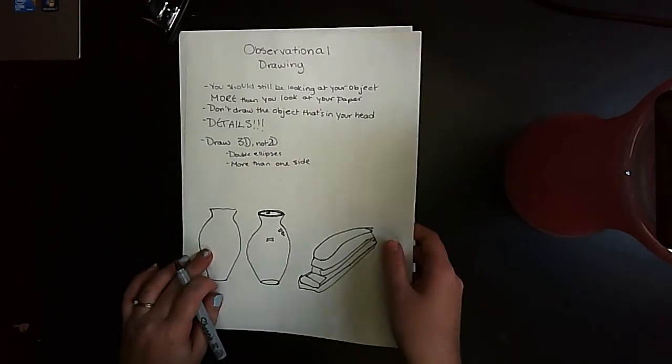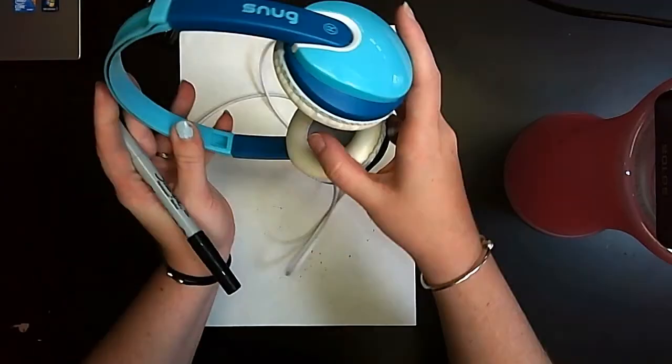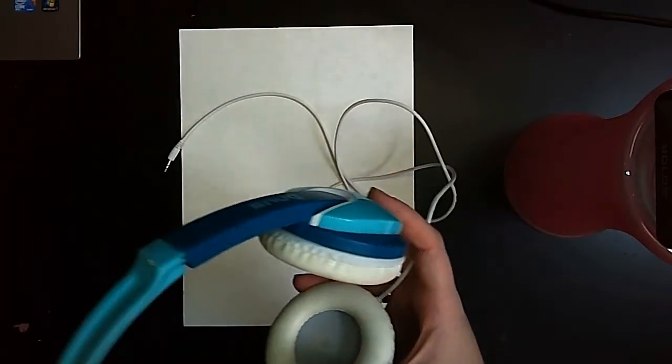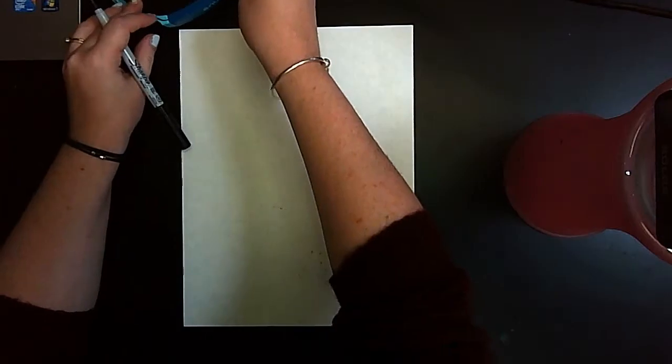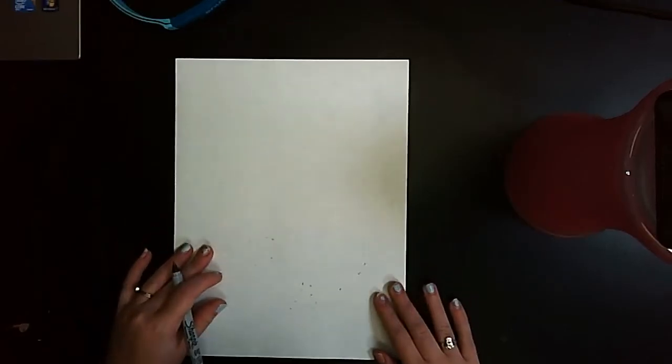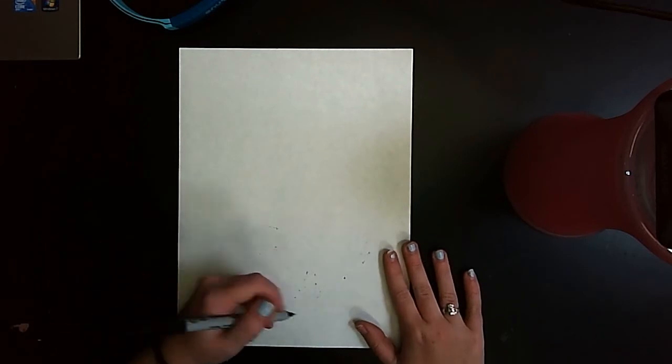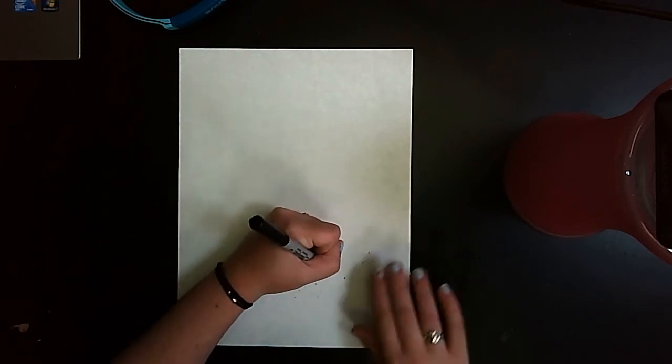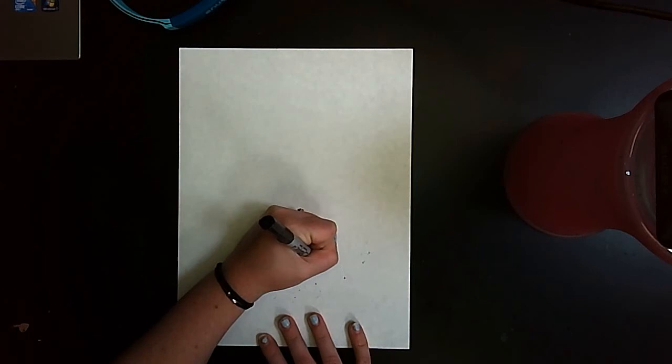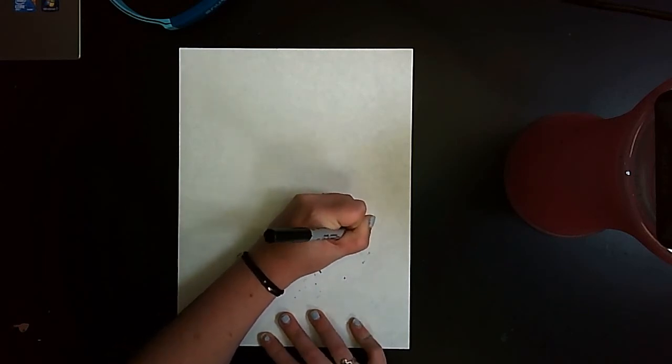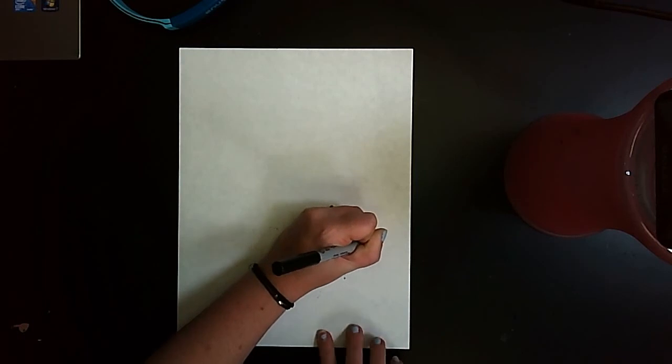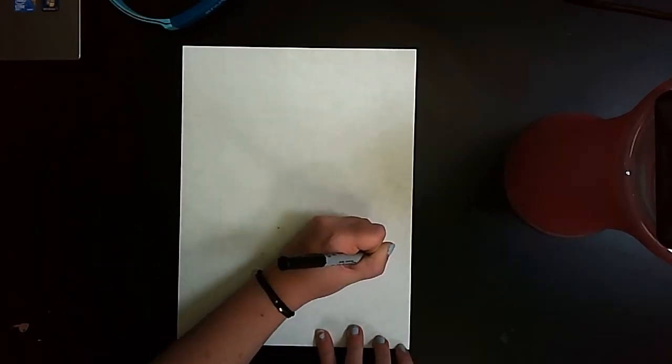I am going to do a quick observational drawing just to give you one more example of these headphones. Just like always, you should put your object off to the side in front of you so you can see it while you draw. Pick a place to start, and still my eye is following the motion of my hands.